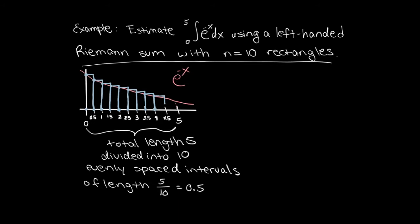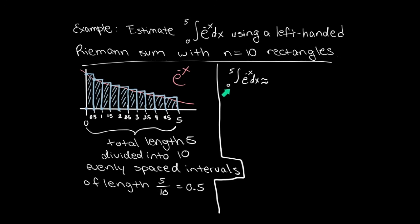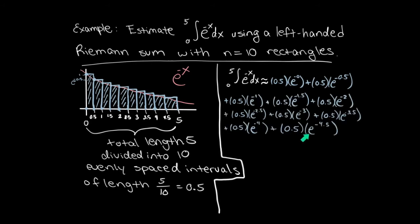There are 10 subintervals, so there are 10 rectangles — that was given to us in the problem when it said n equals 10. Now let's put in the hard work and add all of this up. The area of rectangle number 1 is the width times the height. The width is 0.5, and the height is e to the minus 0, which equals 1. For rectangle number 2, the width is still a half, and the height is e raised to the negative 0.5 power. I hope you can see the pattern. We'll continue through the third, fourth, fifth, and remaining rectangles. We need a calculator to add this up. The area given by the rectangles is approximately equal to 1.26.